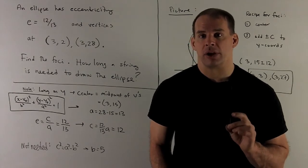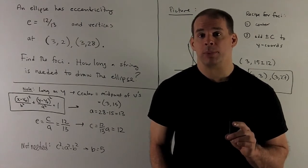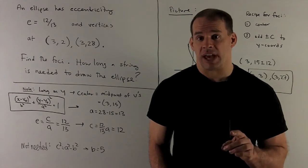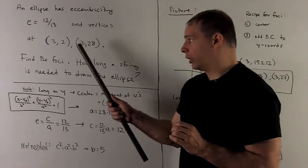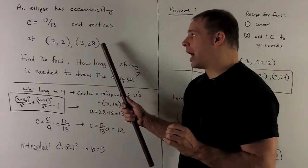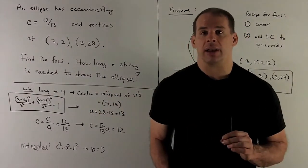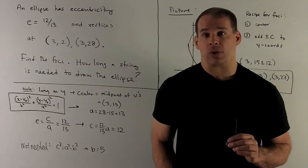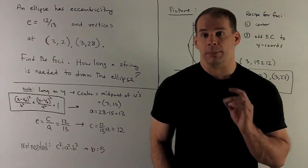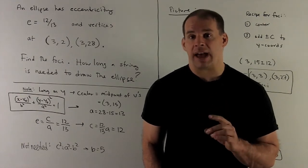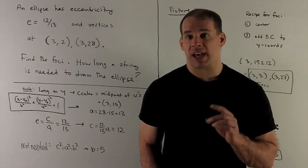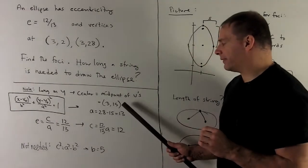Let's take a look at our vertices. From that we can get the center and the length of the major axis. Here we note there's only going to be a change in y, so we're looking at major axis going in the y direction. The midpoint here is going to be 3 comma the average of our y values. So the center is going to be at (3,15).